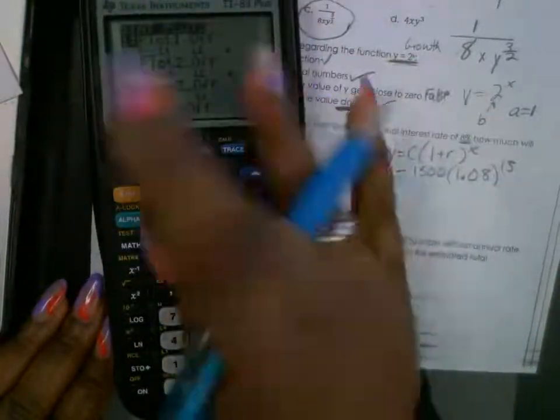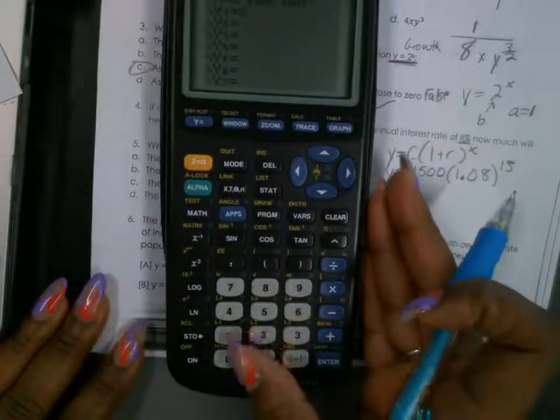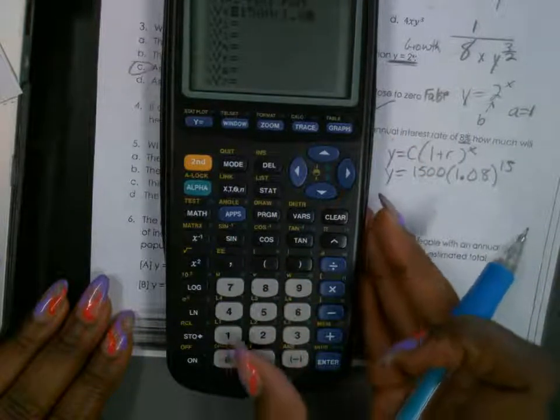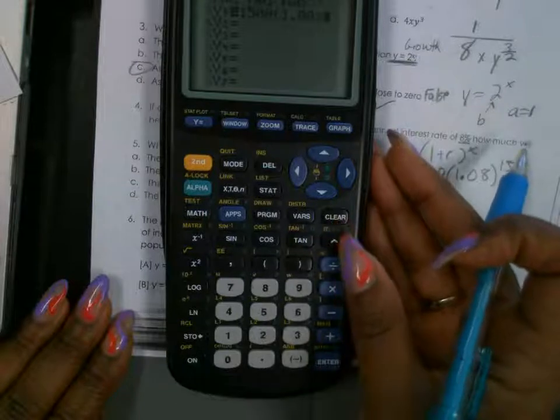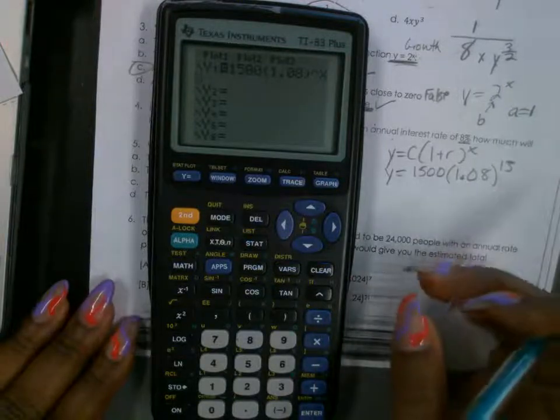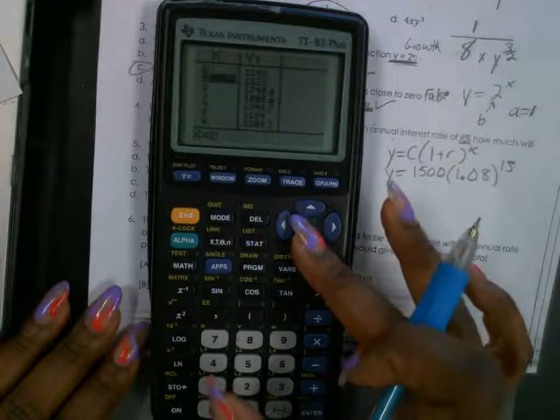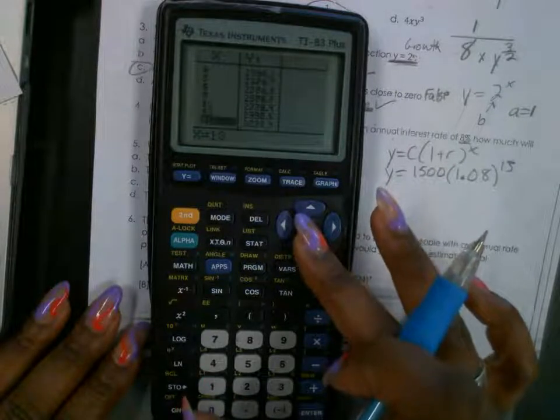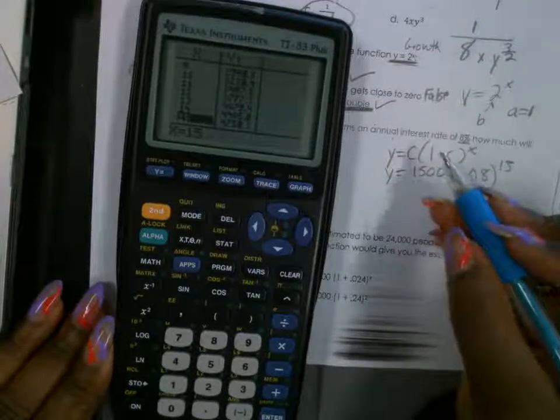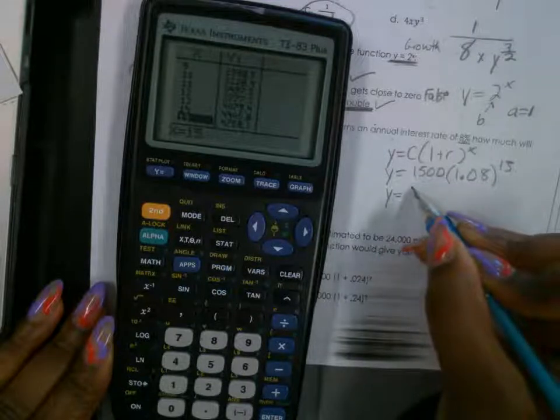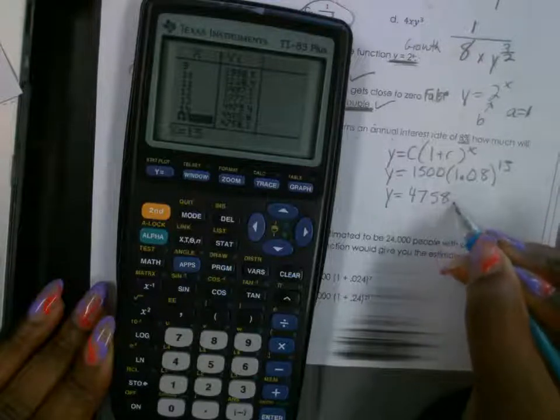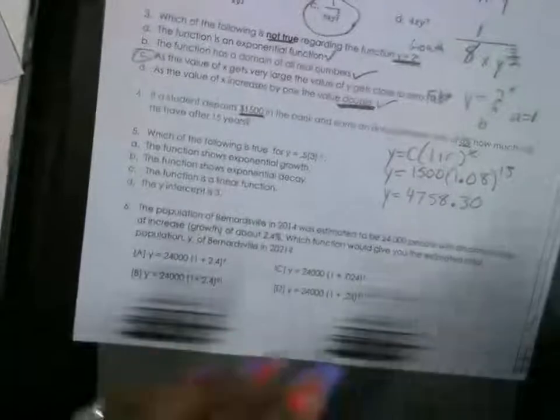Let's go to y equals. Equals, we got 1,500 times 1.08 raised to the x power, carry key, x power. Okay. And we want to, oh, I should have just typed in 15. Gosh. That's okay. I'll type it in the table, and then I'll just go down to 15. I don't know why I didn't just type 15 in, y'all, and put it in, just put it in, you know, just type it in calculator instead of going to y equals. But anyway, y here is equal to 4,700, so it's 4,758.3, so that's 30 cents. Okay.